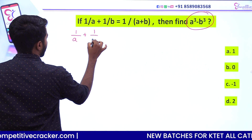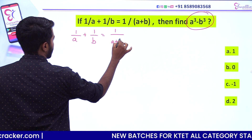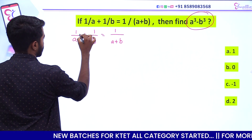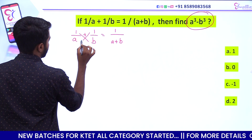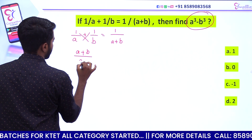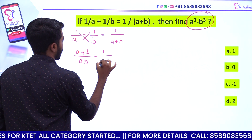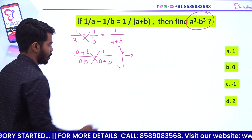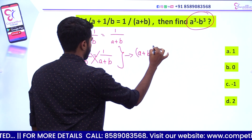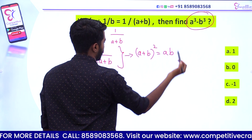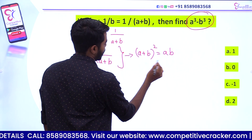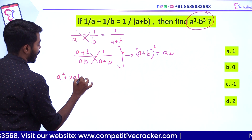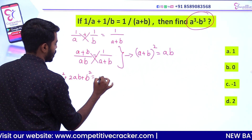1 by a plus 1 by b is equal to 1 by a plus b. That is what we do. Let's do this question. That is, a plus b equals 1 by a plus b, which implies a plus b the whole square is equal to 1 by a plus b. That is, a plus b the whole square is equal to a square plus 2ab plus b square is equal to ab.